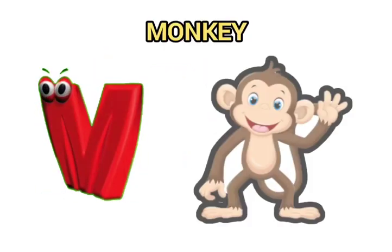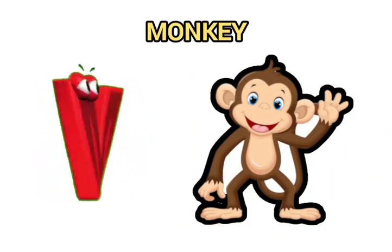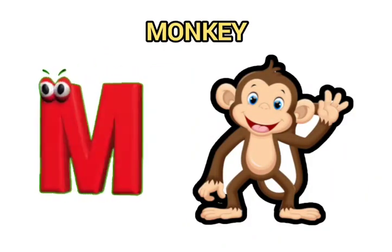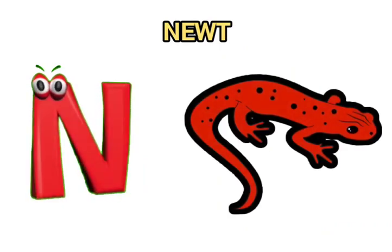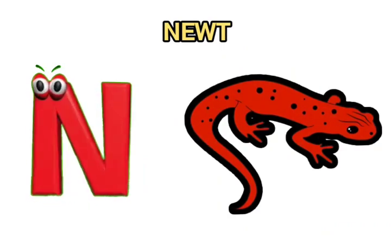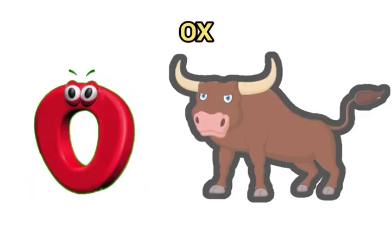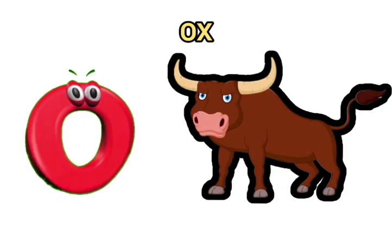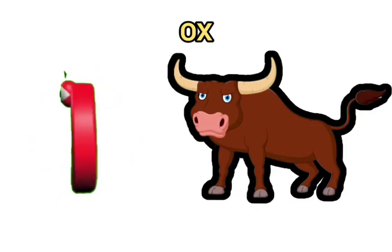M is for monkey, monkey. N is for newt. O is for ox, ox.